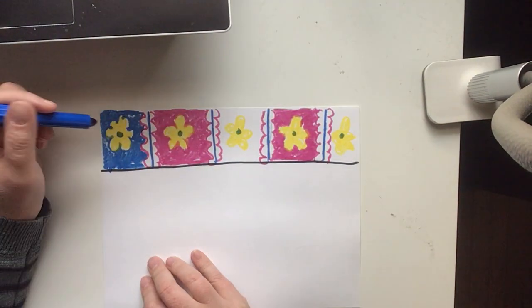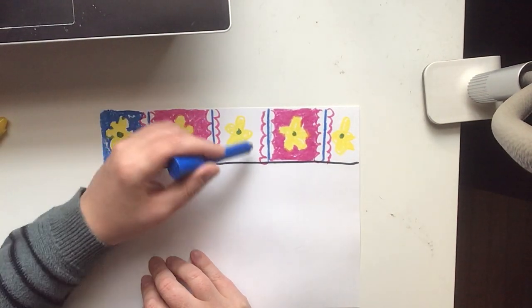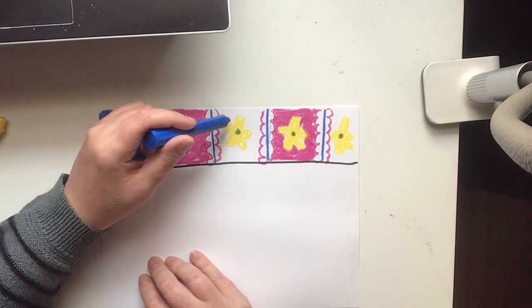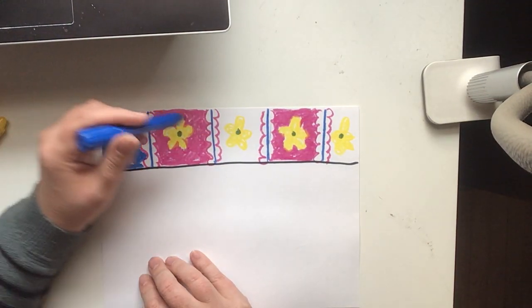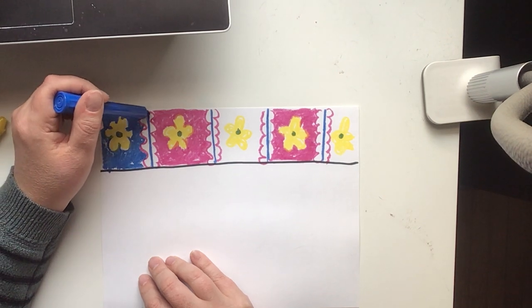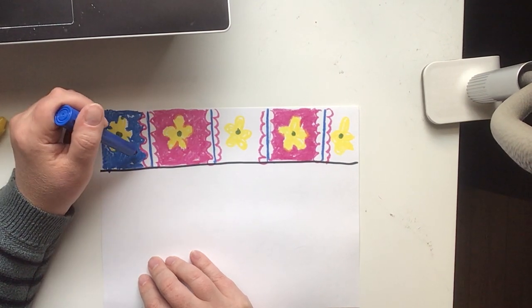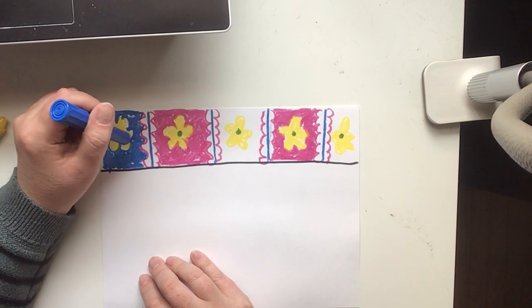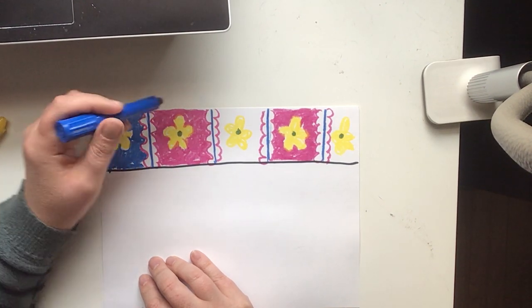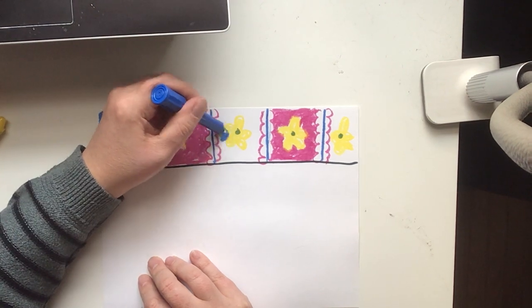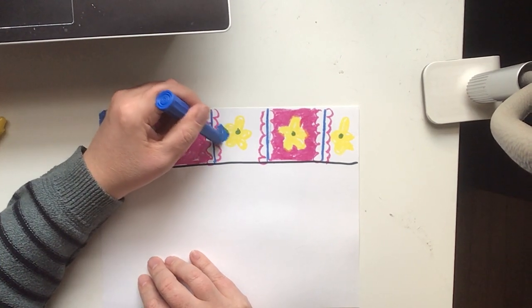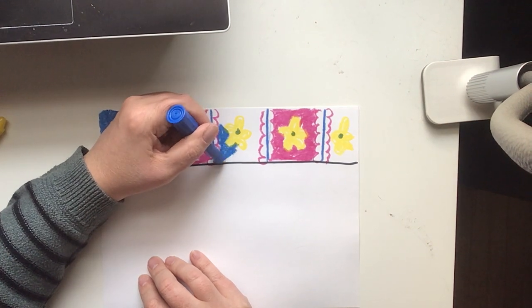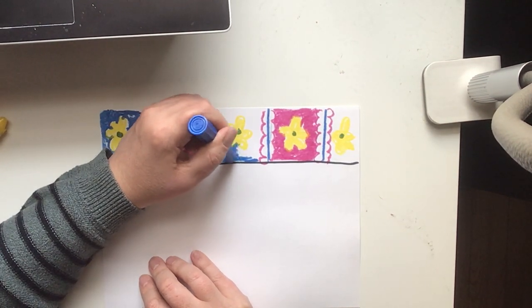I colored those in and now I'm coloring in all of the empty space, making a pattern with color. It was blue, purple, blue, purple, blue. My pattern has lines, the lines are a pattern. My pattern has color, the colors are a pattern. And my pattern has shapes, the shapes are also a pattern. My wallpaper makes a pattern three different ways. How many ways can you make a pattern on your wallpaper?